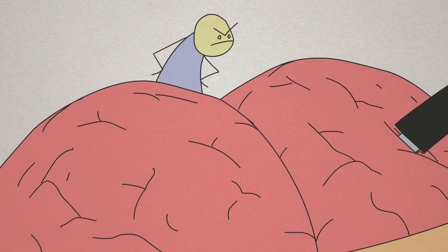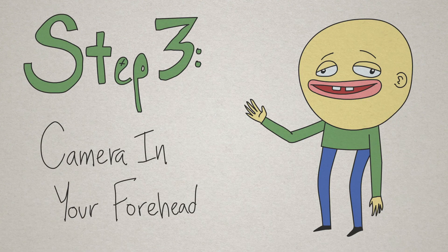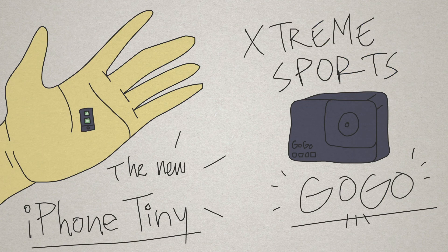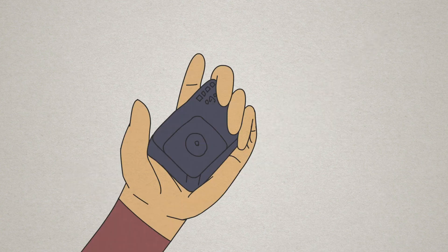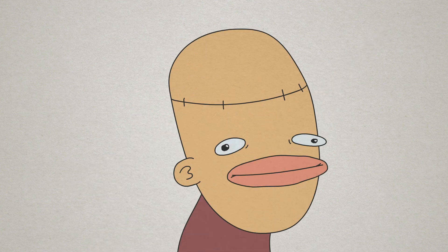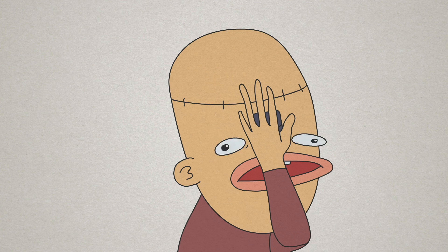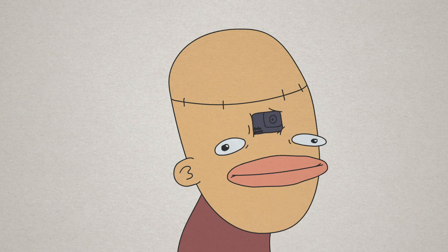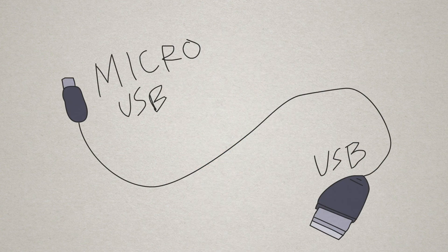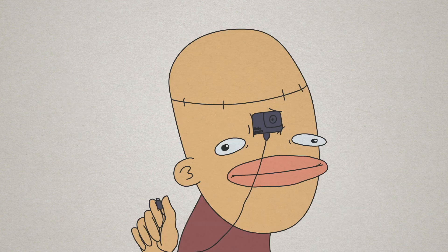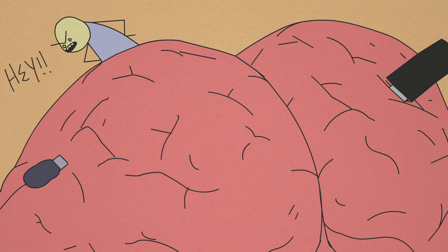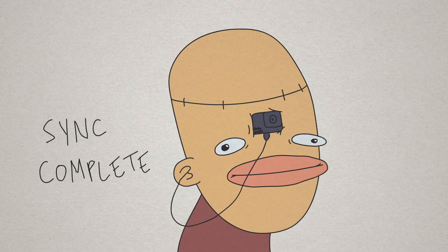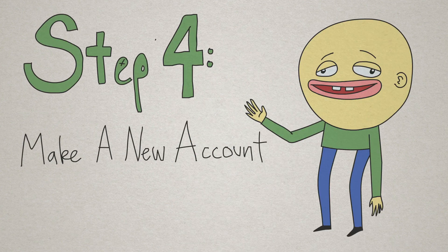Step three: camera in your forehead. Preferably an iPhone or GoPro, but pretty much anything that can take videos works. You're just gonna grab it and shove it into the center of your forehead — might hurt for a little bit, but it's worth it. Then take the micro USB to USB and shove it through your ear until you can feel it wiggling your brain around. Keep shoving until you hear a click. Now your algorithm can see through your camera.